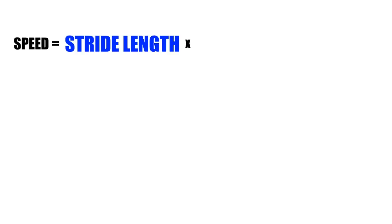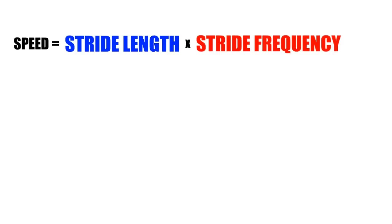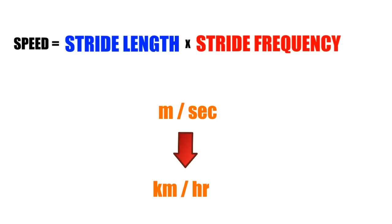That's the closest you're going to get to moral maths. So as all you're trying to do is go faster, is there a sprint equation? Yes! Your speed is your stride length times your stride frequency, in metres per second, which you then convert to kilometres per hour.